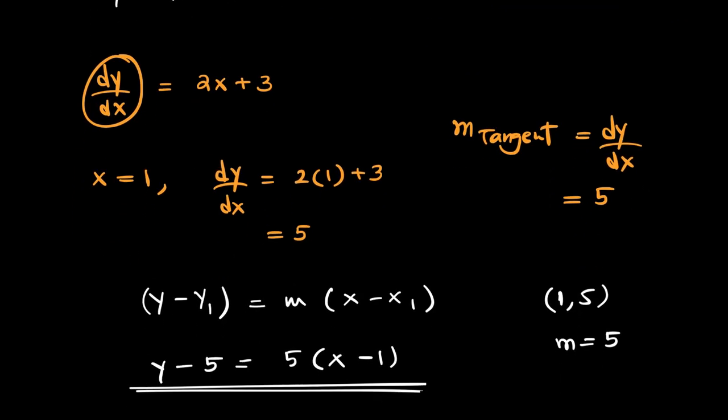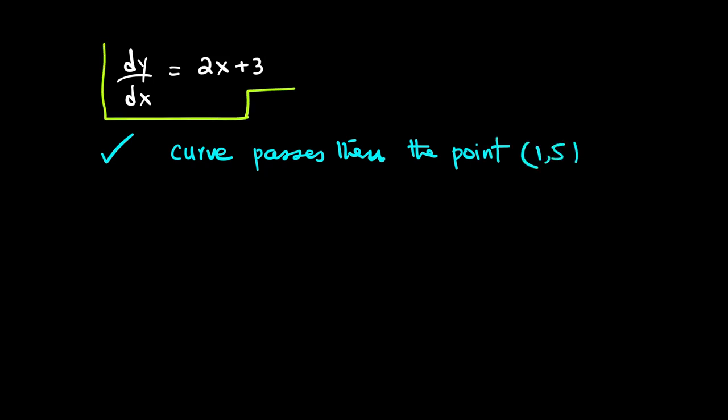Now, let's do the reverse. What if the question is dy/dx is given as 2x plus 3? Second piece of information is that the curve passes through the point (1,5). So, we are given the gradient function. We are given the info that the curve passes through the point (1,5). What is the question being asked? The question being asked is find equation of the curve.